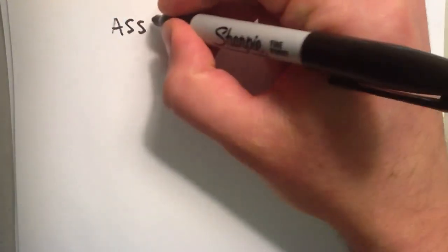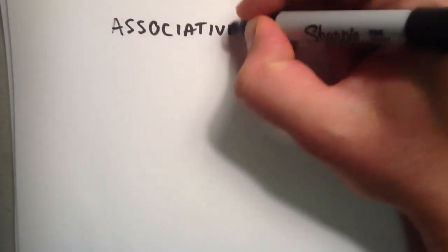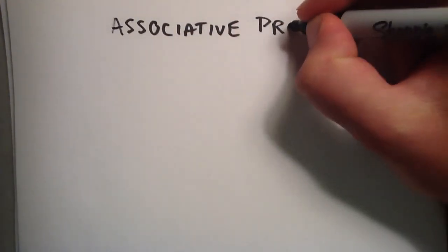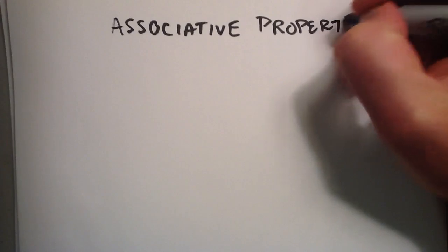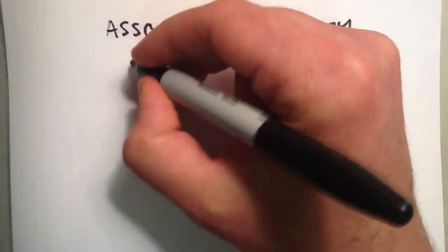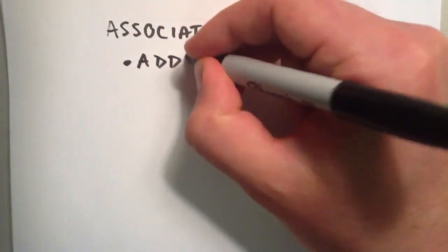The next property is going to be the associative property. So let me go ahead and just write that down right here, associative property. Okay, so there's the associative property of addition and multiplication, so we'll start with addition.